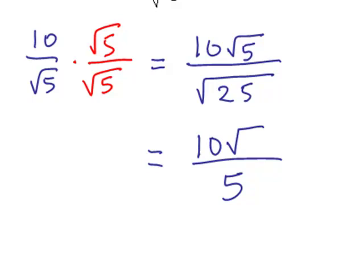The numerator is still 10 square root of 5, and the whole numbers can simplify. We can divide out 5 here and are left with 1, and 5 into 10, we get 2. The end result here is that we get 2 square root of 5.